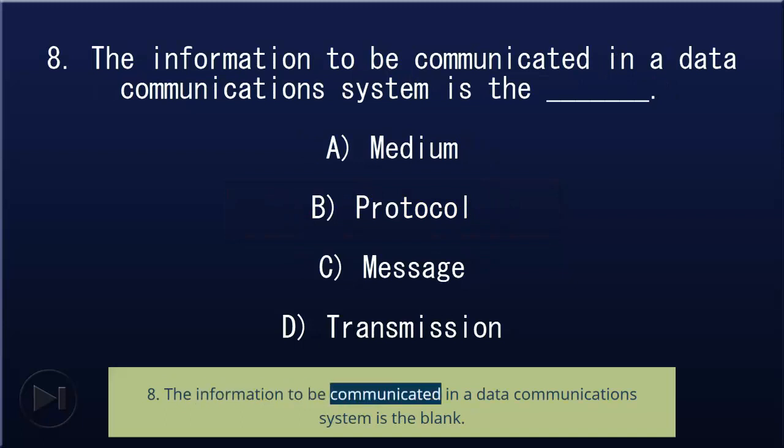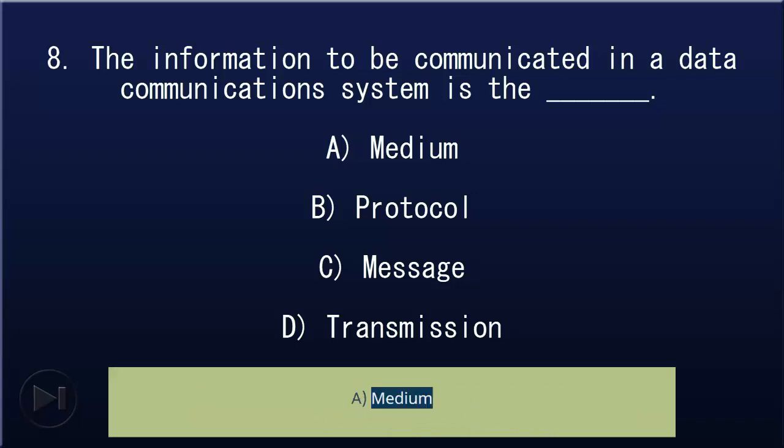8. The information to be communicated in a data communication system is the blank: A) medium, B) protocol, C) message, D) transmission. Answer: C, message.